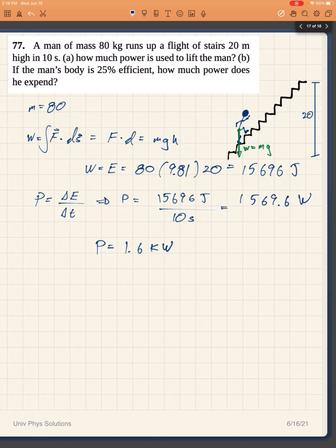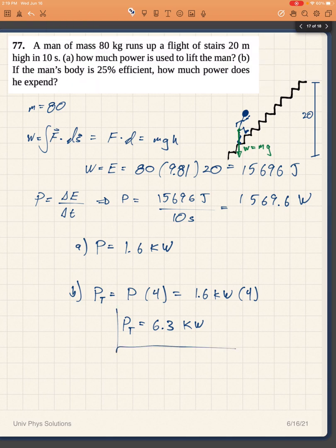Now if his body is 25% efficient, that means that this only makes up 25% of the power that his body requires. So then the total power would be the power that he used, 1.6 times 4, which should be 1.6 kilowatts times 4. So his total power output would be 6.3 kilowatts.